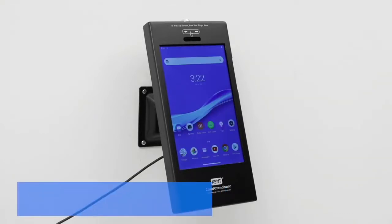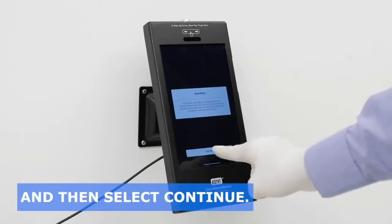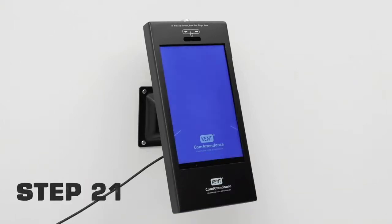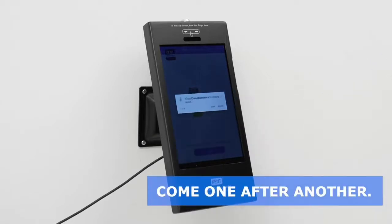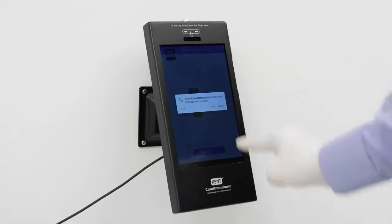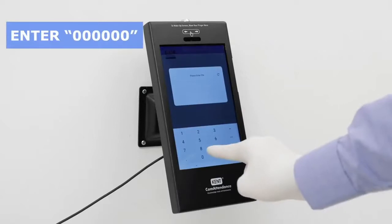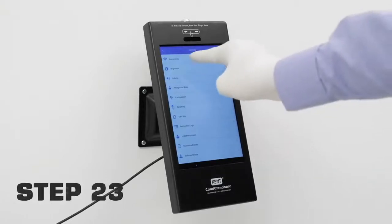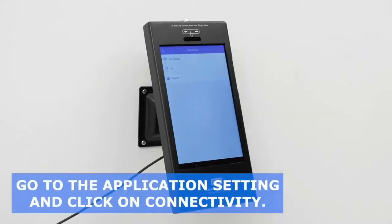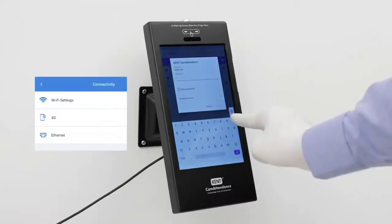Step 20: Kent Cam Attendance application gets automatically launched on the tablet and then select Continue. Step 21: Now four permission to access pop-ups come one after another. Select Allow button every time to give permissions to the application. Step 22: Enter 00000 as the device pin. Step 23: Go to the application setting and click on Connectivity. Then choose your preferred network mode, LAN, 4G or Wi-Fi for connecting to internet.